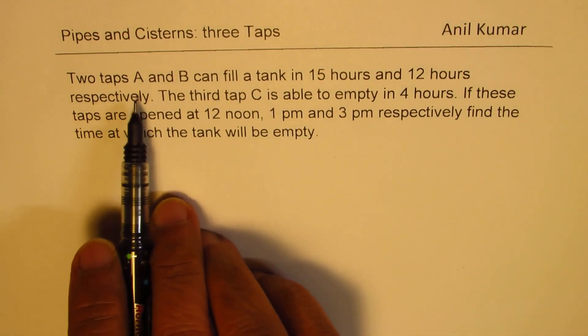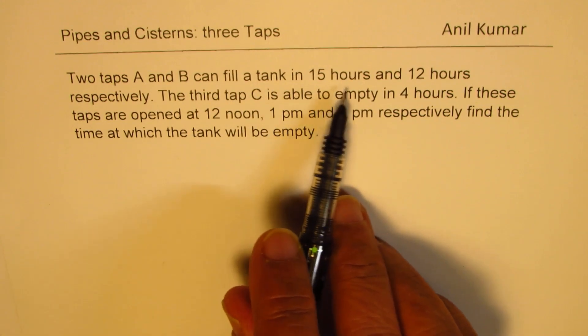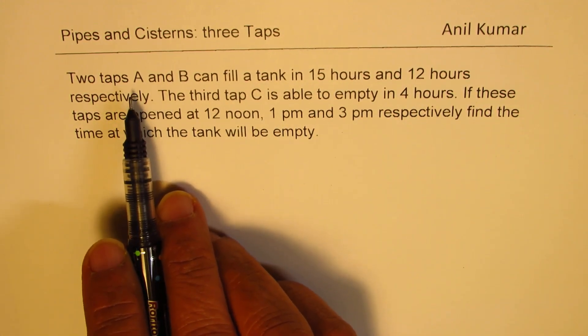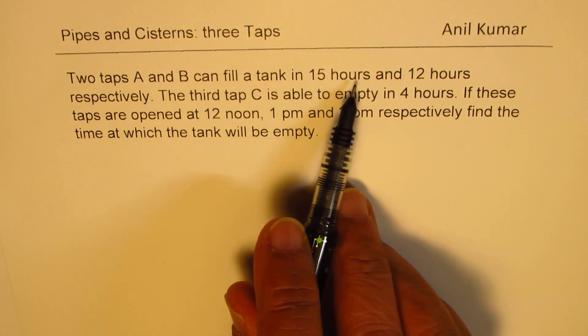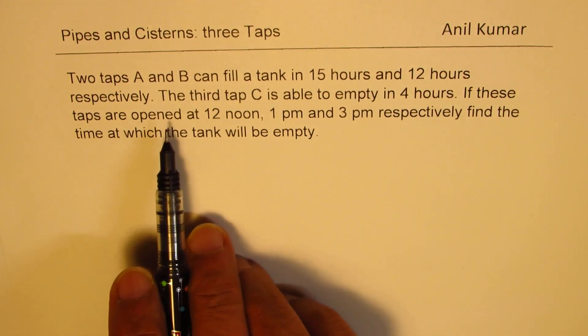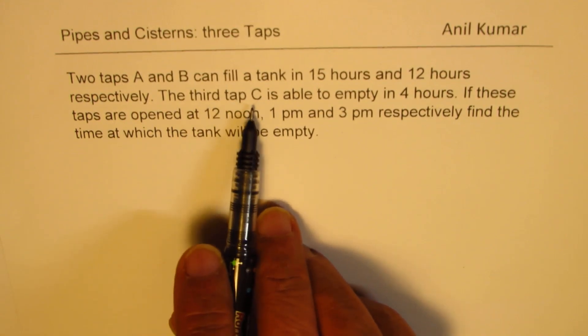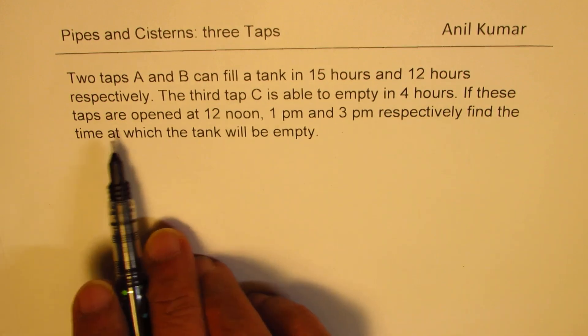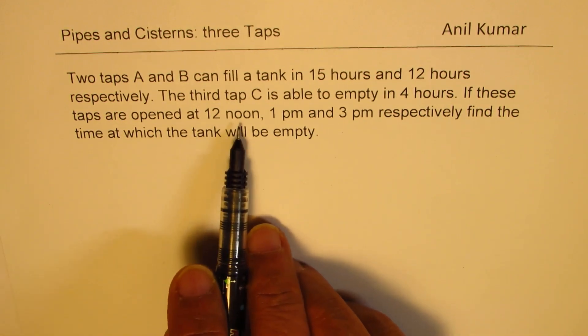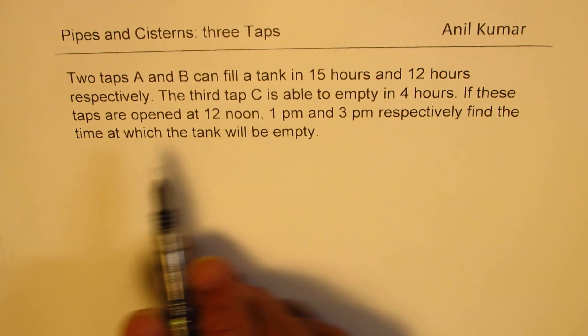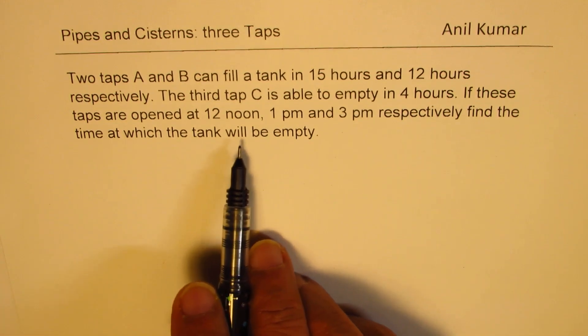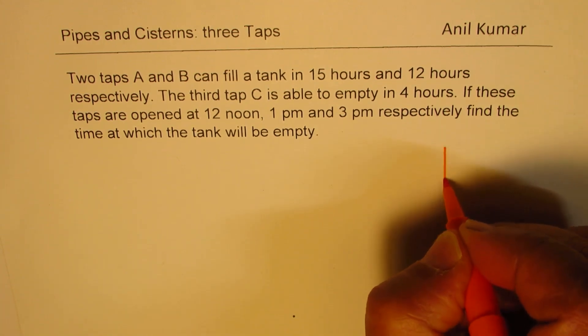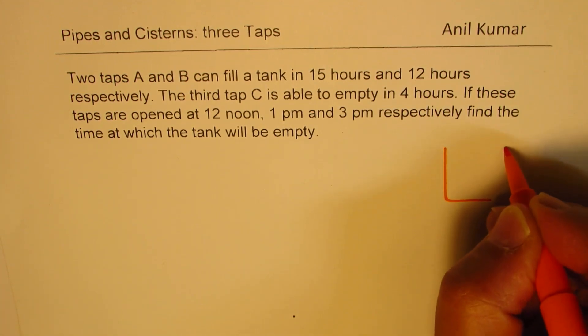Two taps A and B can fill a tank in 15 hours and 12 hours respectively. The third tap C is able to empty in four hours. If these taps are opened at 12 noon, 1 p.m. and 3 p.m. respectively, find the time at which the tank will be empty. So I'd like you to pause the video, answer the question, and then look into my suggestions.